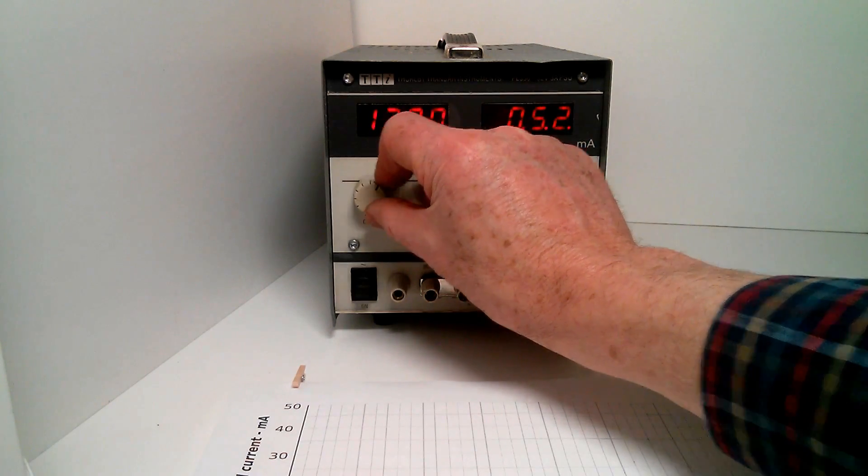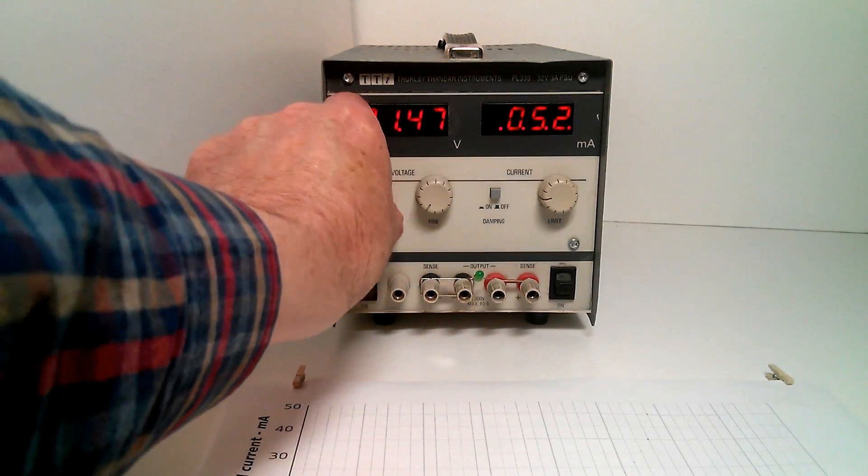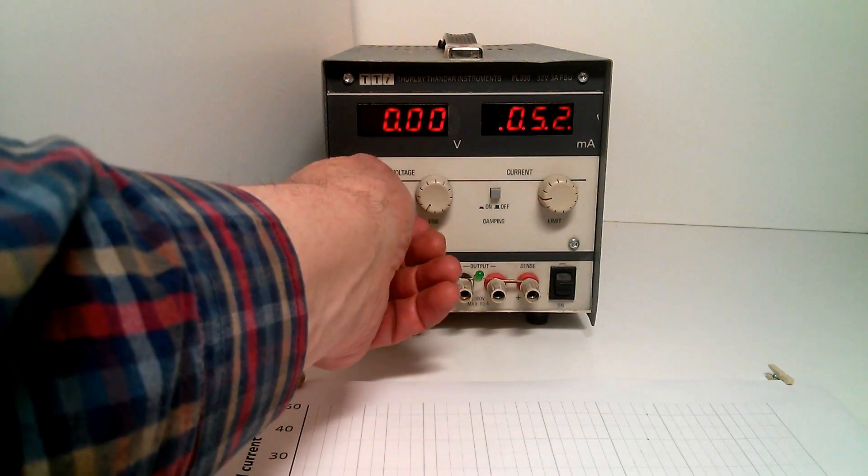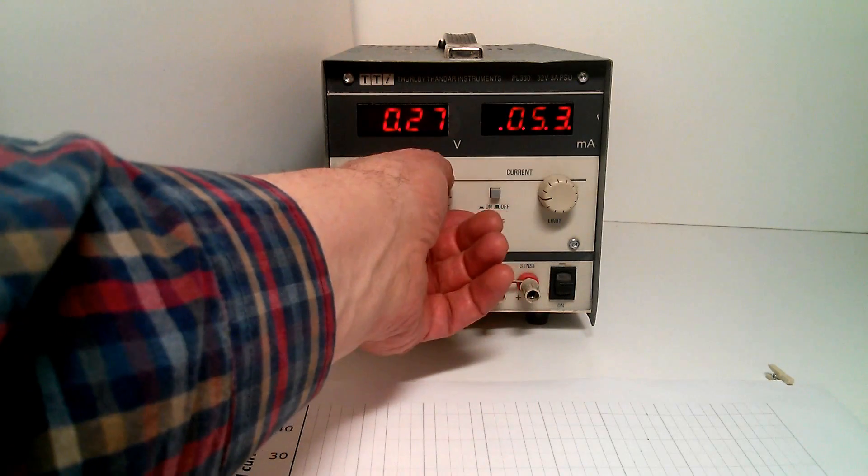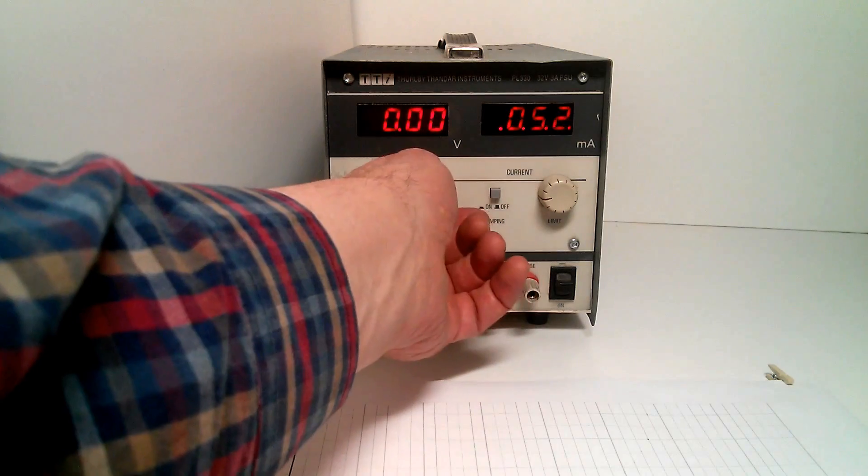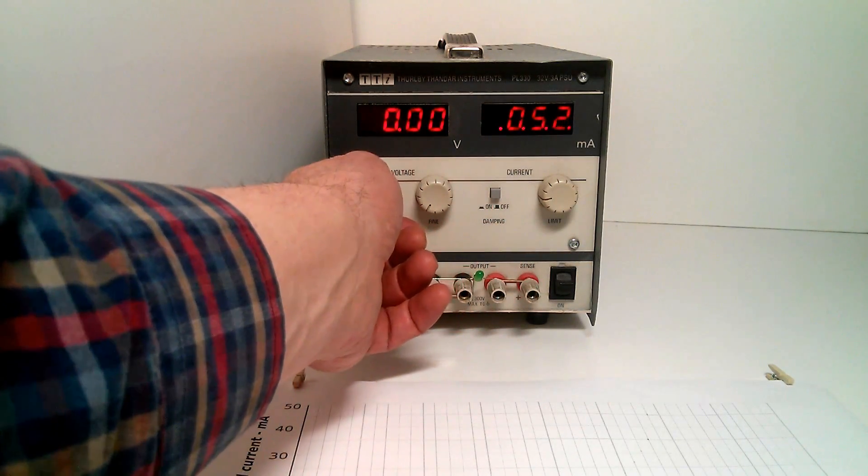The coarse voltage knob on this power supply allows us to go up to 30 volts, which would destroy the LED. We also have a fine voltage control, which seems to give about 0.6 volt adjustment on the voltage. So we'll have to jiggle these to get the fine steps we want.